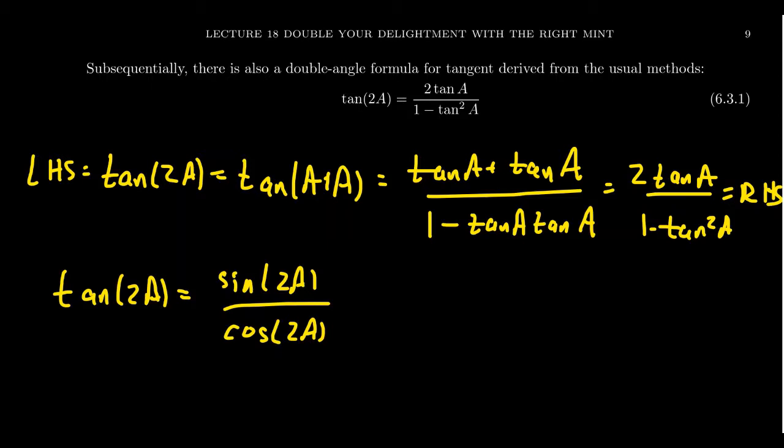Secant of 2a, cosecant of 2a, cotangent of 2a. That's the basic idea, for which you could expand the numerators here. You're going to get 2 sine of a cosine of a all over cosine squared a minus sine squared a.